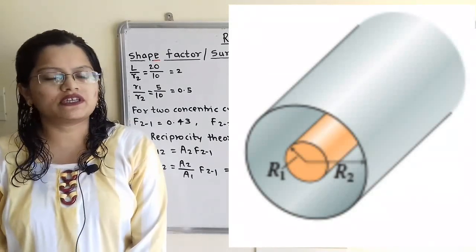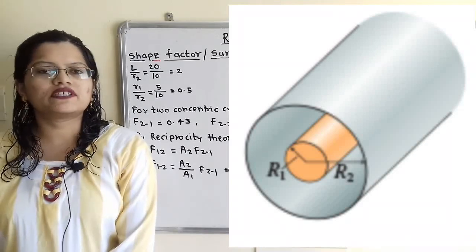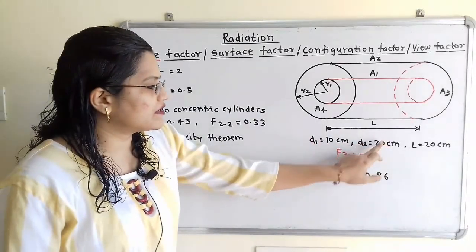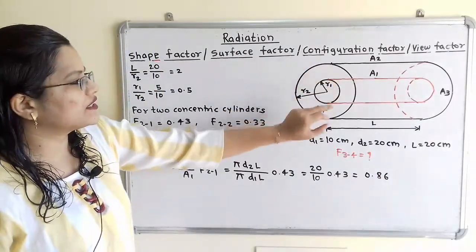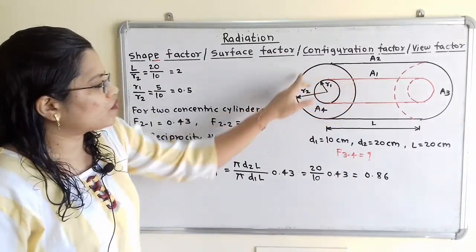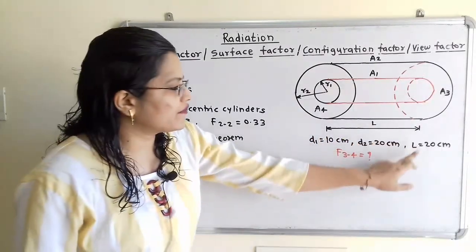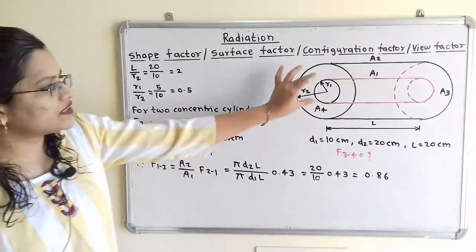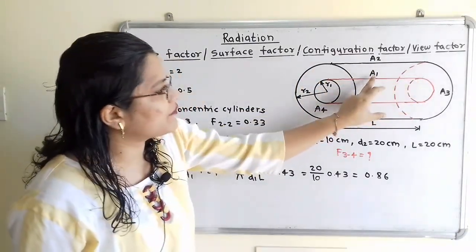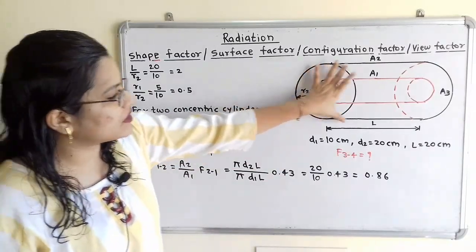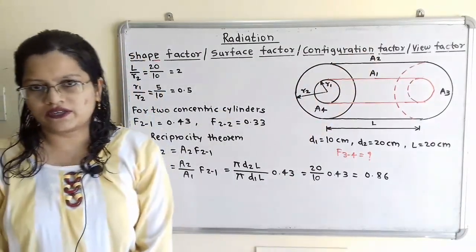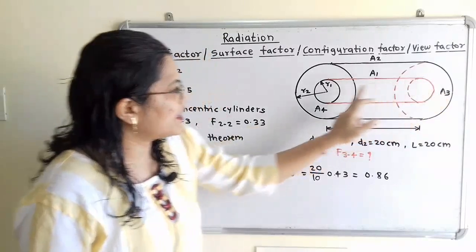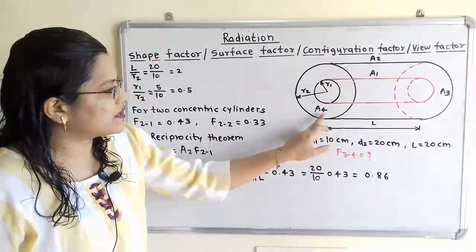Let us understand the given dimensions with the help of a diagram. The inside cylinder diameter D1 and outside cylinder diameter D2 are given, so we draw the diagram with inside cylinder radius R1 and outside cylinder radius R2. The length is also given as 20 cm. For the inside cylinder, the horizontal surface area is labeled A1, and for the outside cylinder the horizontal surface area is A2. At the open ends there is solid material, so we label those surface areas A3 and A4.